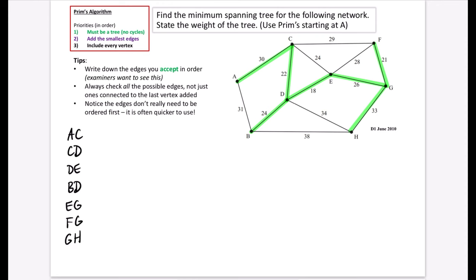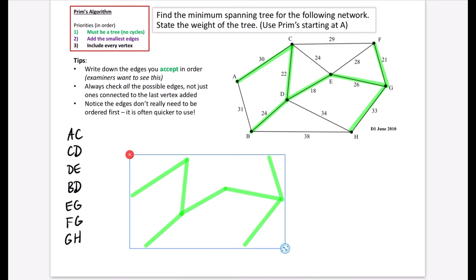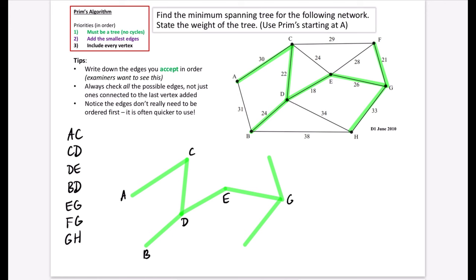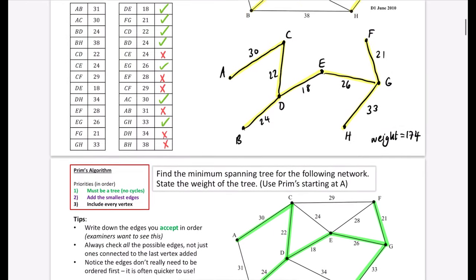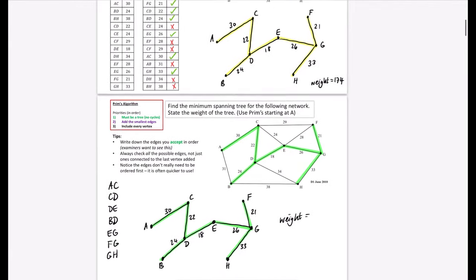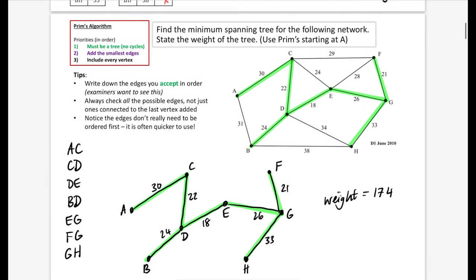Drawing out the tree from Prim's algorithm gives us A, C, D, B, E, G, F, and H — exactly the same minimum spanning tree as with Kruskal's. Adding the weights: 30, 22, 24, 18, 26, 21, and 33, the total weight is 174. Both algorithms produce the same minimum spanning tree with the same weight.